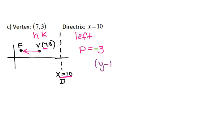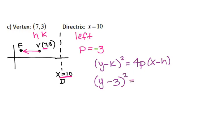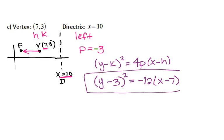I'm going to use this version of my equation: y minus k quantity squared equals 4p times x minus h. So I have y minus 3 from my vertex, equals 4p — well p is negative 3, so 4 times negative 3 is negative 12 — times x minus 7. There is your equation for the parabola with vertex at 7, 3, and directrix at x equals 10.